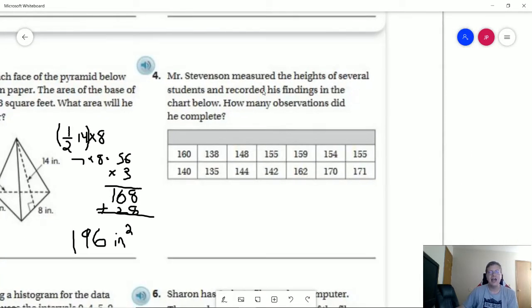So number four. How many observations? We can just count by twos going across this way and that would give us 14.